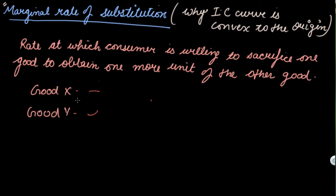This means you are consuming one more unit of X in place of Y. Now, how much good Y do you have to sacrifice in order to get one extra unit of good X? That is the Marginal Rate of Substitution.